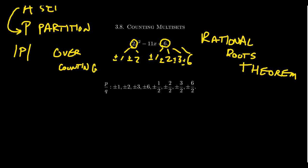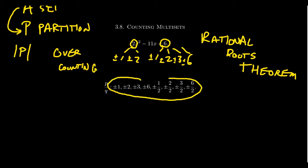You have to take all the possible divisors of 6 and divide them by all the possible divisors of 2. Looking at the complete list, you get: plus or minus 1, plus or minus 2, plus or minus 3, plus or minus 6, plus or minus 1/2, plus or minus 2/2, plus or minus 3/2, and plus or minus 6/2. This gives us the list of potential rational roots — the rational roots theorem says that if this polynomial has a rational root, it's among these numbers.